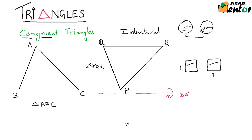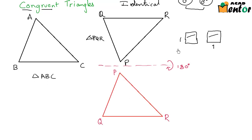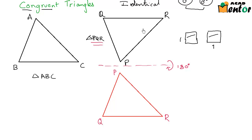Let's see what that gives us. On rotating, I would have a figure of this sort. Since it is a rotated figure, I have made it in red. Triangle PQR is just the rotated version of this particular triangle.